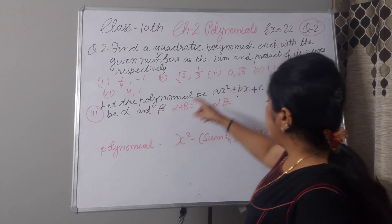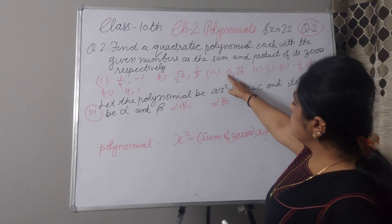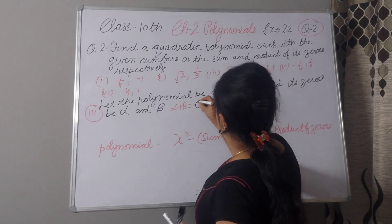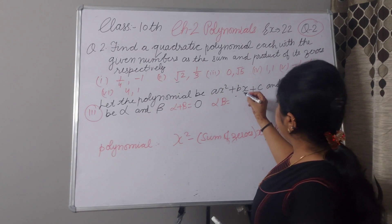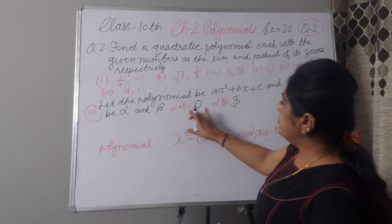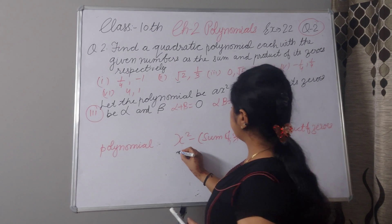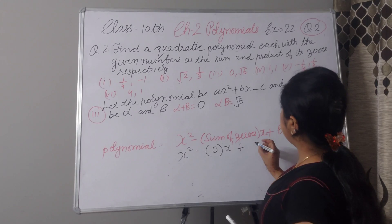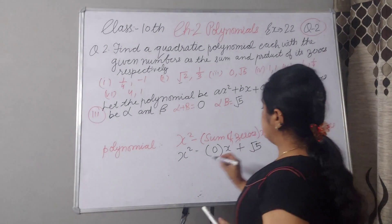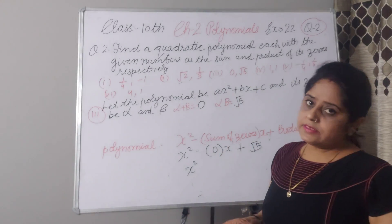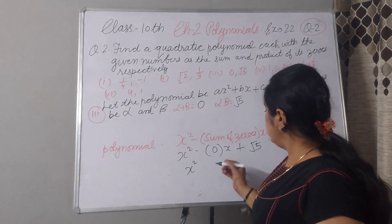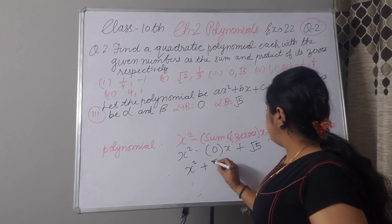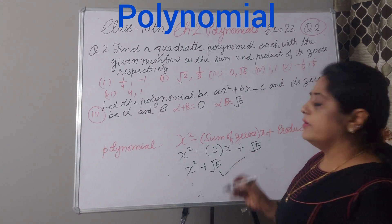Now, third part. The sum of zeroes is 0 and the product of zeroes is root 5. Substituting into x² minus (sum of zeroes) times x plus (product of zeroes): x² minus 0 times x plus root 5. Since 0 times x equals 0, there is no middle term. Our polynomial is x² plus root 5.